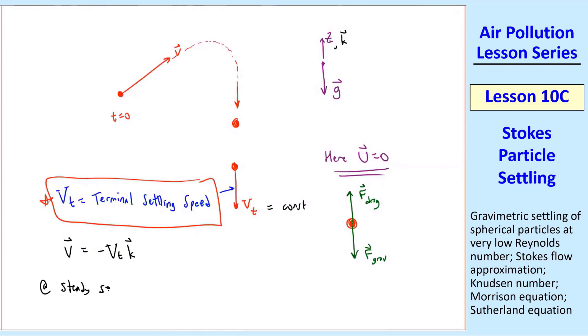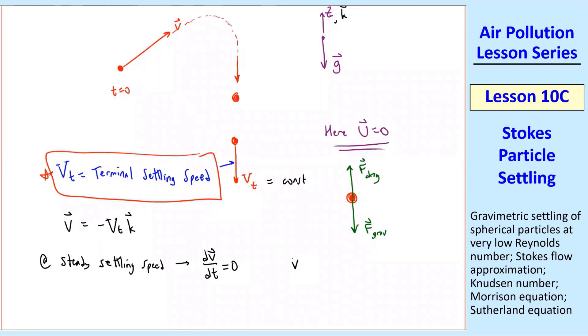So v is equal to negative Vt times k, where k is the unit vector in the z direction up. When you have a steady settling speed, there's no acceleration, therefore dv/dt is equal to 0. And in that equation, remember we had that little trick where we had vr, and then we had the magnitude of vr.